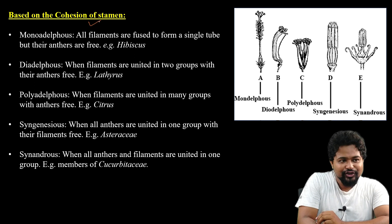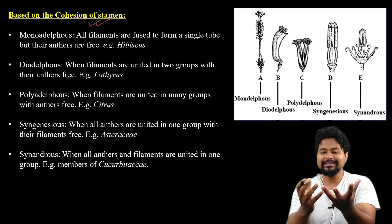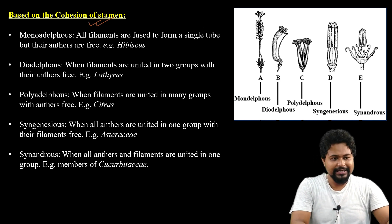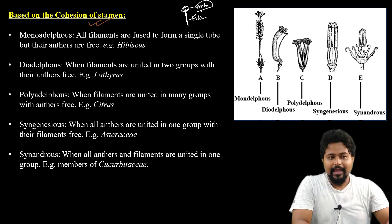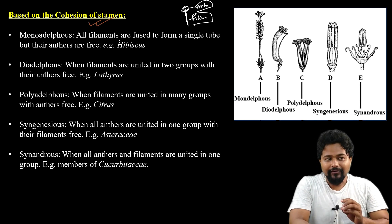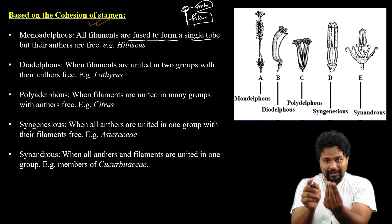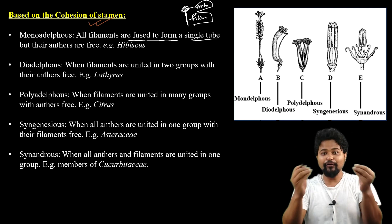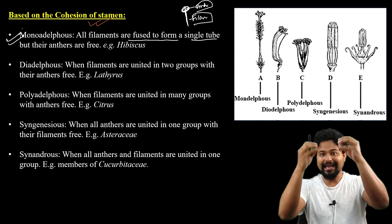Next is the classification based on the cohesion of stamens. Stamens can be free. The stamen consists of a filament and an anther. If all filaments are fused to form a single tube but the anther block is free, then this condition is monadelphous. Filaments are fused, but the anthers are free.